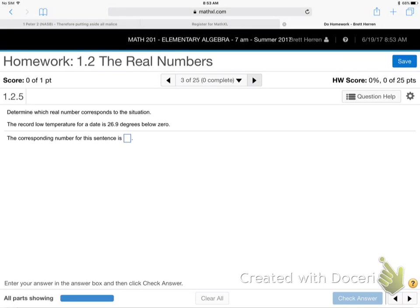All right, there we go. So, if you can read that, the record low temperature for a date is 26.9, I'll just write that part bigger, 26.9 degrees below zero.